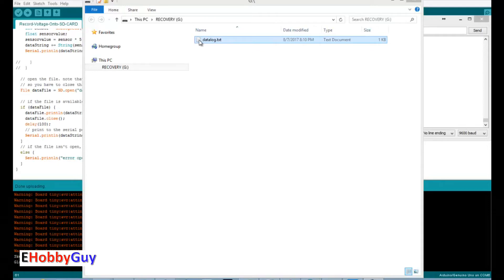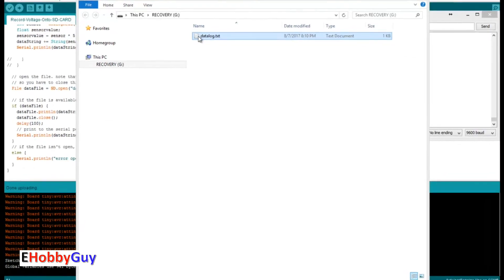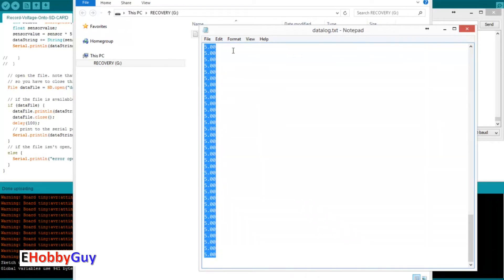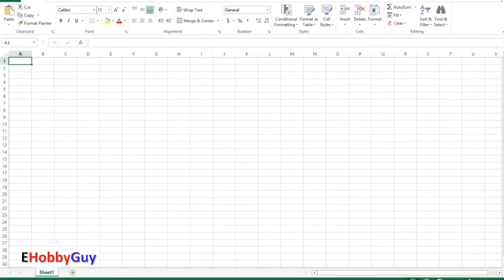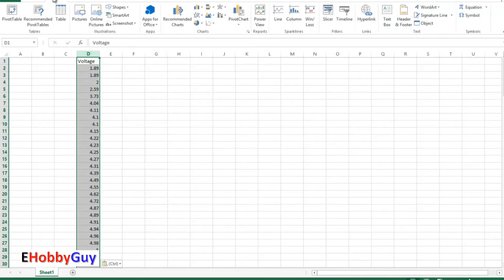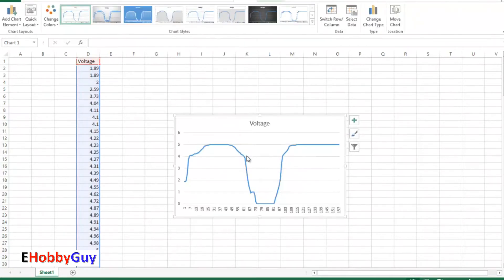I just popped the micro SD card into my PC. Here is the data log dot text file and here's the data that's written. I'm just going to select everything, copy it, and jump over to Excel. I'll call this voltage and paste all the data in there.